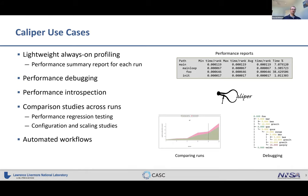Typical use cases include lightweight always-on profiling — you can just print a summary report of program performance in a text form. It supports basic performance debugging tasks for finding bottlenecks, performance introspection to query runtime from within the program, and automated workflows for performance regression testing and configuration scaling studies.